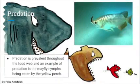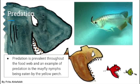Food webs exhibit predation all the time, as the animals above in the food web eat the animals below. In our food web, an example of predation is the yellow perch eating the mayfly nymphs. The mayfly nymphs are located below the yellow perch, making the nymph prey for the perch. This is how ecosystems survive — if animals didn't have predators, their population would grow too large and disrupt the whole food web.